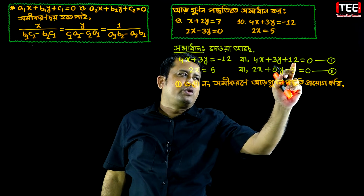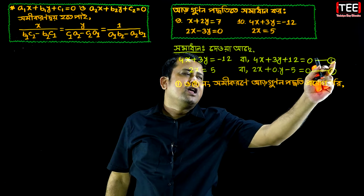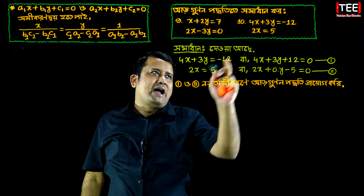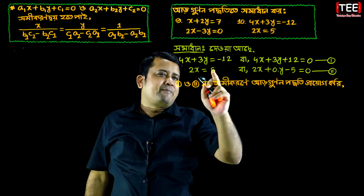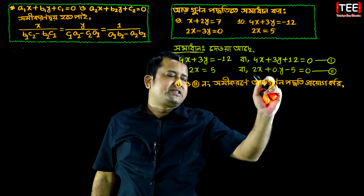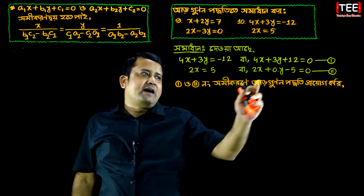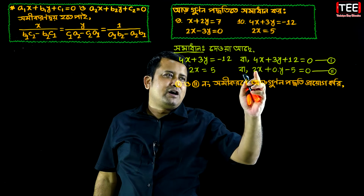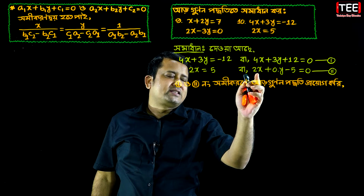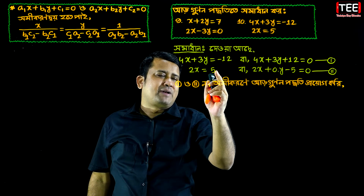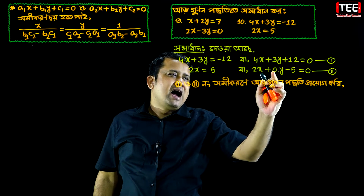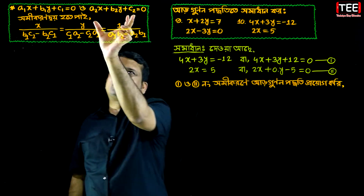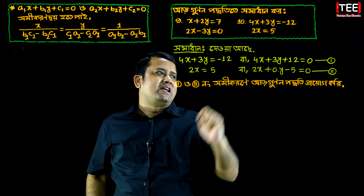2x plus 3y plus 12 equal to 0. 2x equal to 5. 2x plus 2x — if y is not, we will write 0 into y, and y is equal to 0.